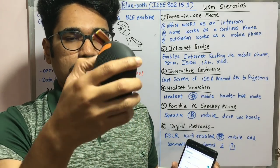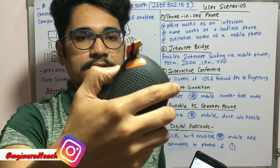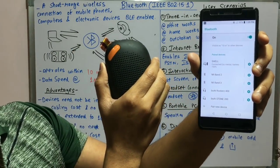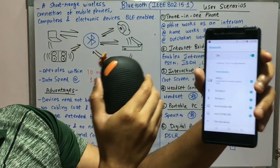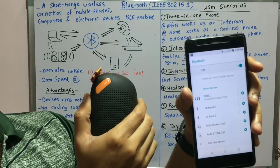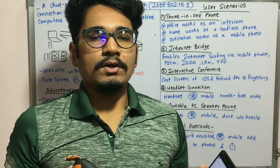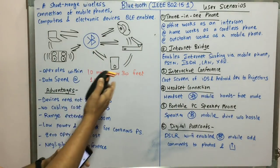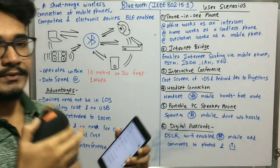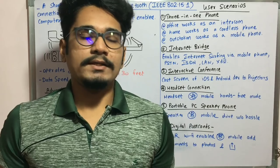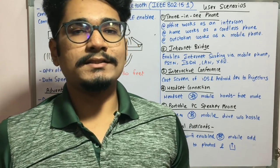I'll turn on the Bluetooth mode, then move the paired device into range — and you can see the device is now connected. It shows the battery percentage as well. This doesn't necessarily mean the devices need to be very nearby; they can be up to 10 meters or 30 feet apart and still pair successfully.